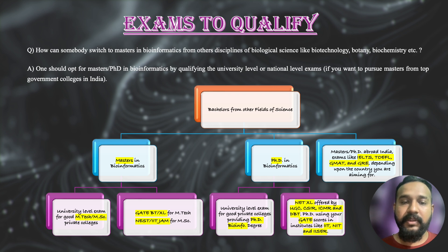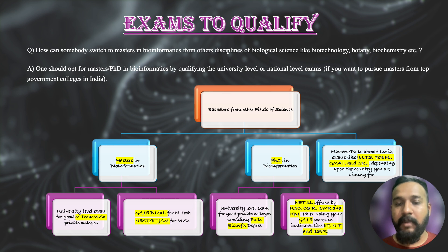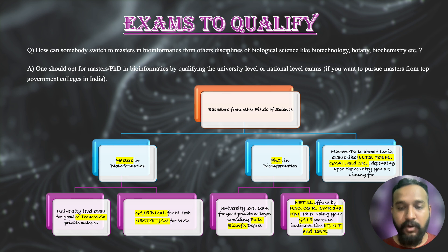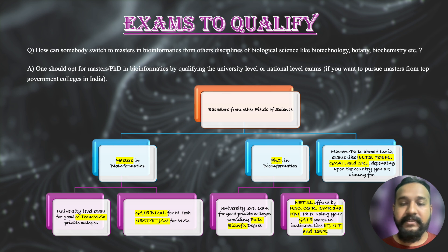Starting with those who have a bachelor's from a different field of sciences, you have two main options: Master's in bioinformatics and then PhD in bioinformatics, and you can also pursue them from abroad. To pursue a Master's in bioinformatics in India, you can qualify national level exams to get into good private colleges, or qualify GATE or BT for MTech from a government university. For an MSc from a government college, you should opt for NEST or IIT JAM.